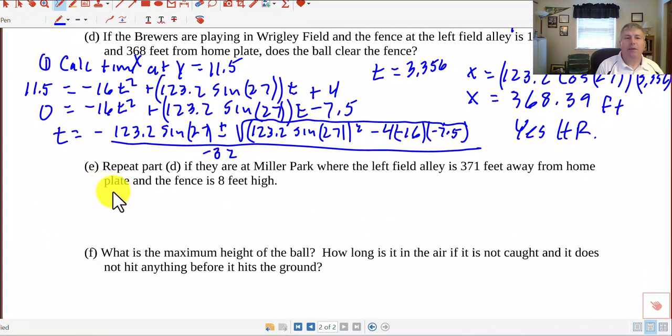In E, it says, repeat part D if they are at Miller Park where the left field alley is 370 feet, 71 feet away from home plate and the fence is 8 feet high. So again, the 371 feet away is our X and the 8 feet high is our Y. So we could back into T say, hey, at what time is it 371 feet away and then determine if it's 8 feet high. It's like doing problem D but we're going to do it in reverse.